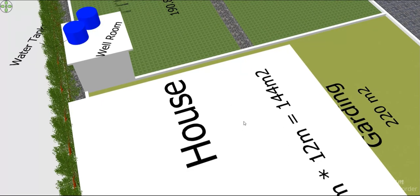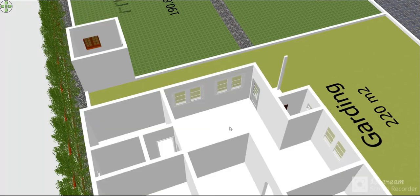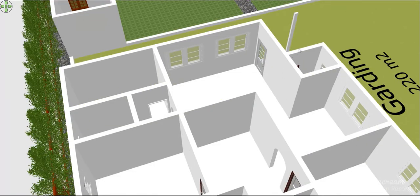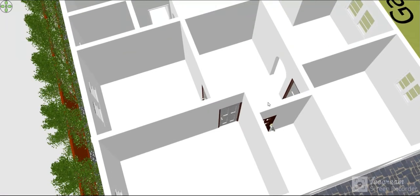Now we can see the interior plan of the house. This is the entrance, this is the sitting area for guests, this is the dining area for guests, and this is the outside bathroom for visitors. Here is the kitchen, here is the bathroom, here is the distribution area, and here are the rooms and the toilet.